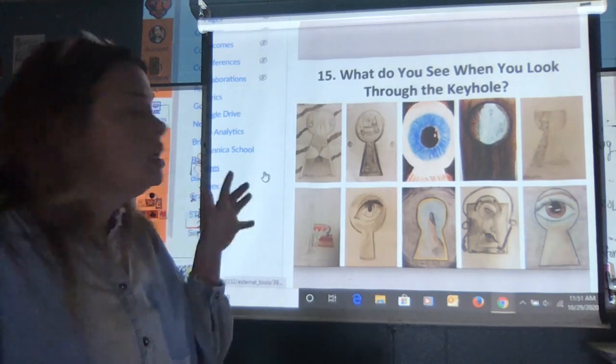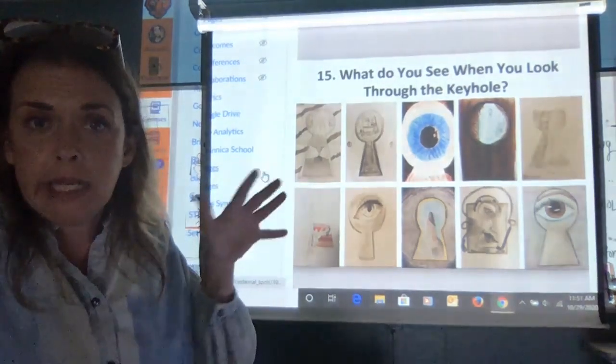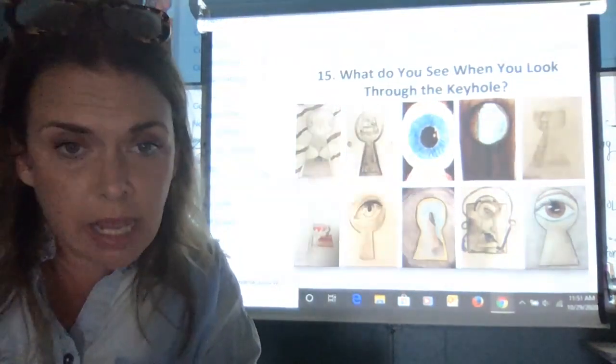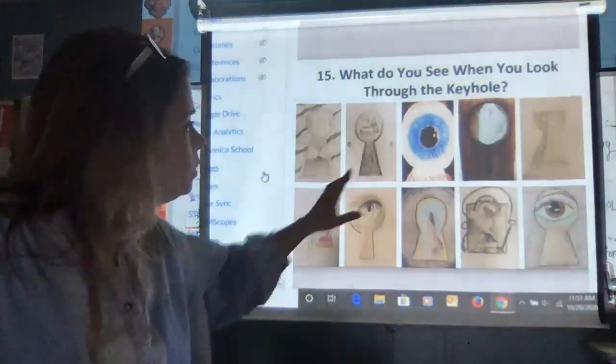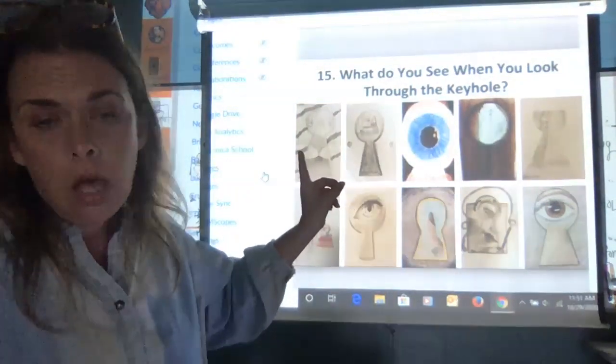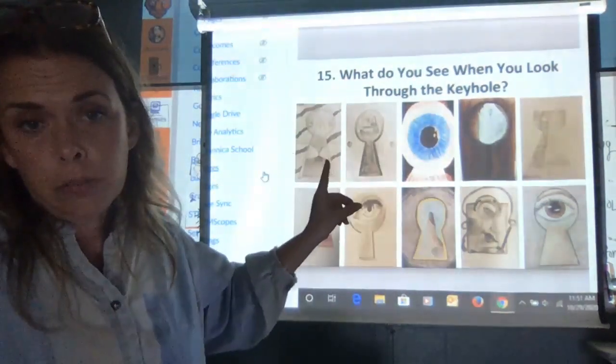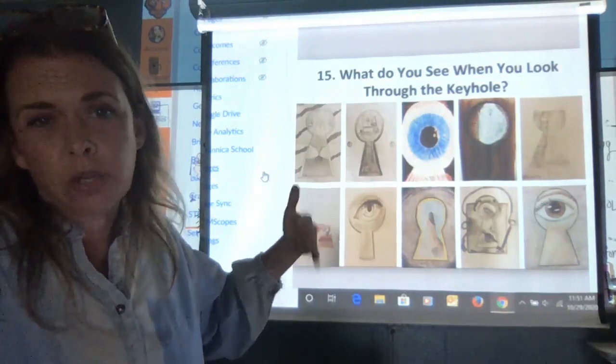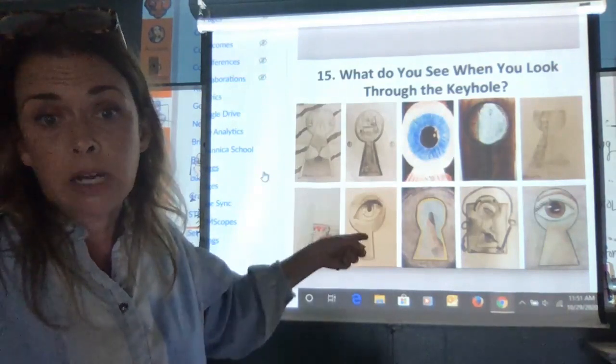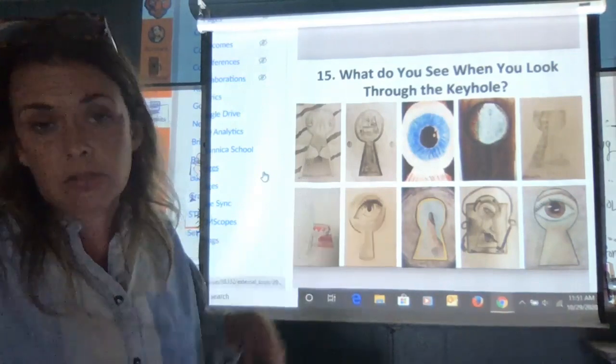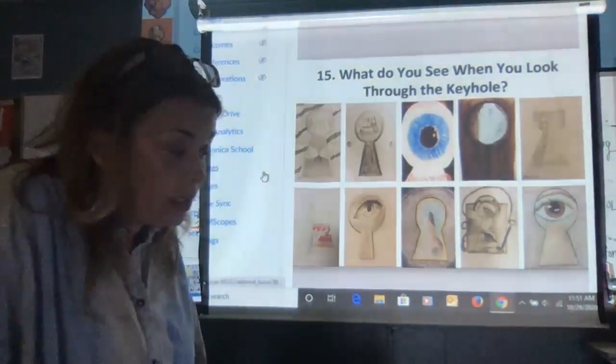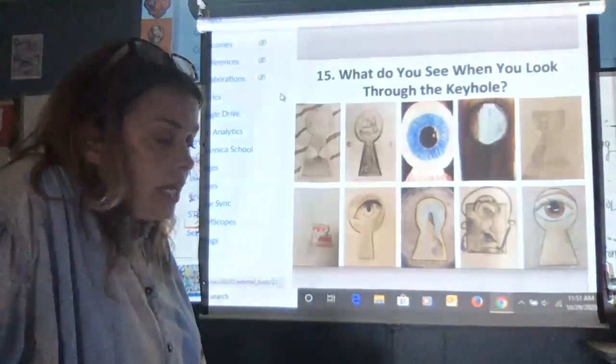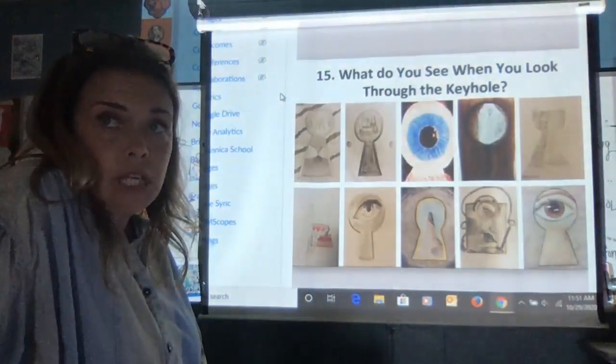You're going to draw the keyhole and then draw what you see inside. Do you see outer space? Do you see some weird skeleton hanging in the attic? What do you see? It doesn't have to be normal. This particular one has a waterfall, so use your imagination. Or is it another eyeball? People tend to like drawing another eyeball, or an animal, or an alien or something. That is your sketch today.